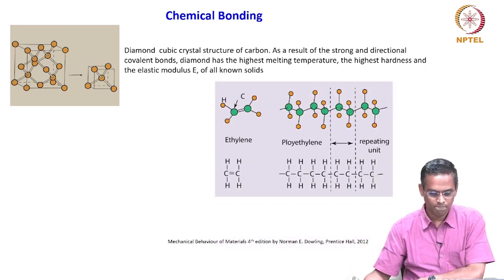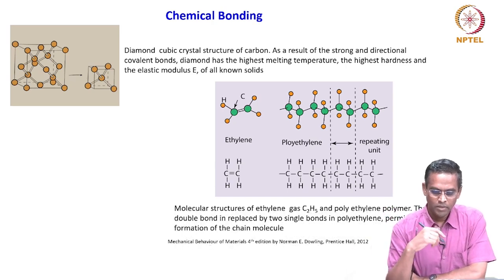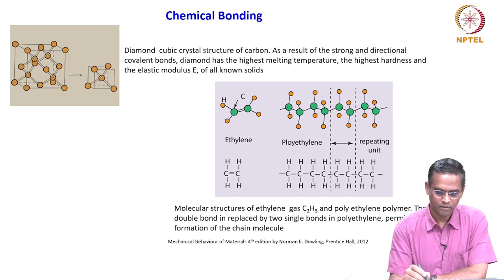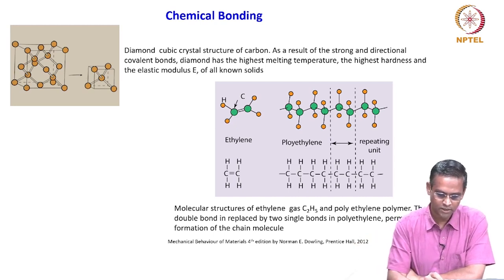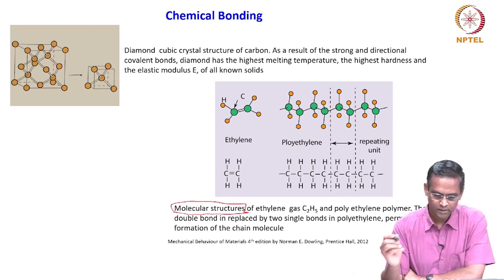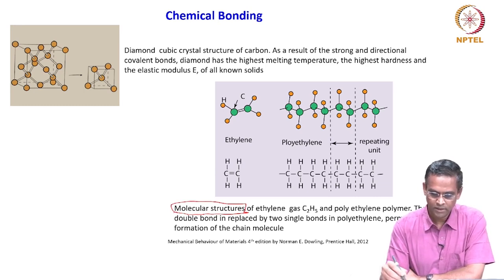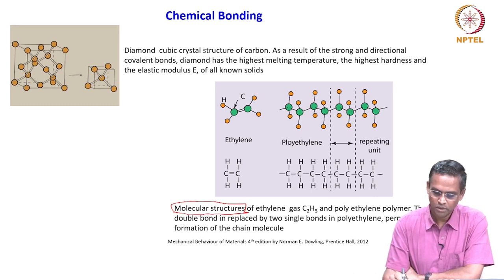Coming to polymeric materials — what we are showing here is ethylene. Polymers are all molecular structures. This is the molecular structure of ethylene gas C2H4; in polyethylene, the double bond is replaced by two single bonds, permitting formation of chain molecules.